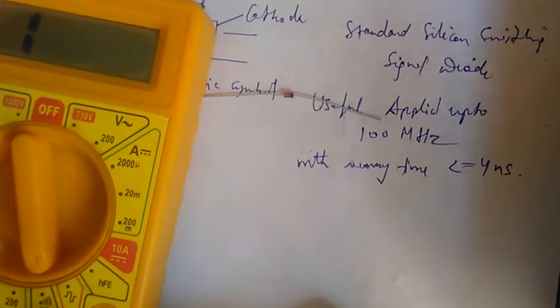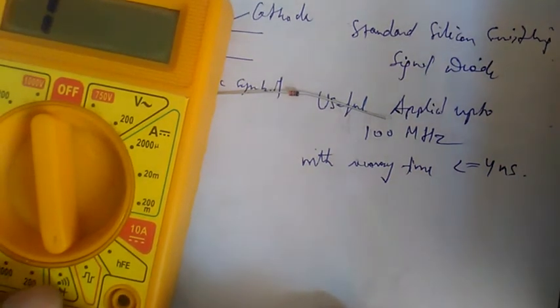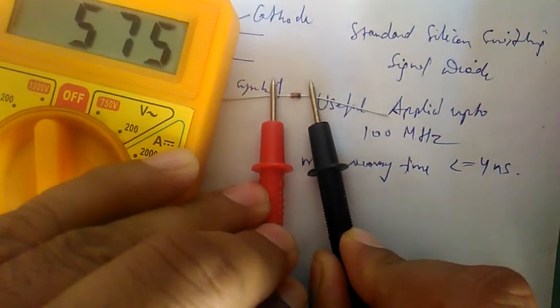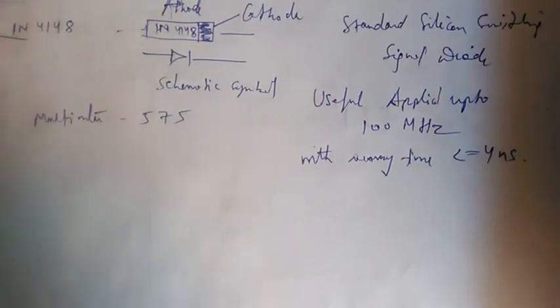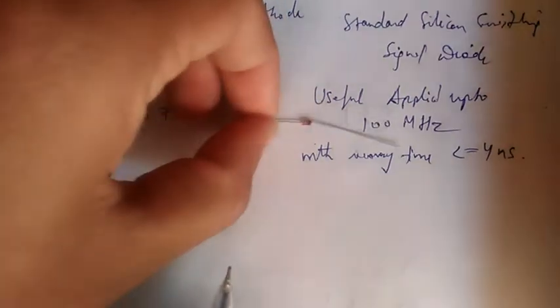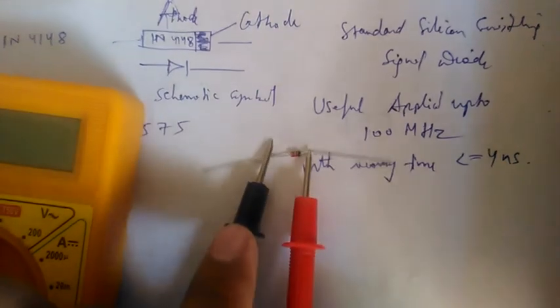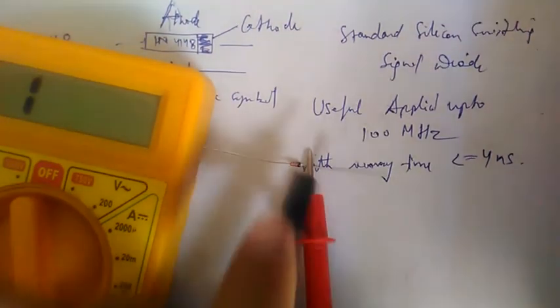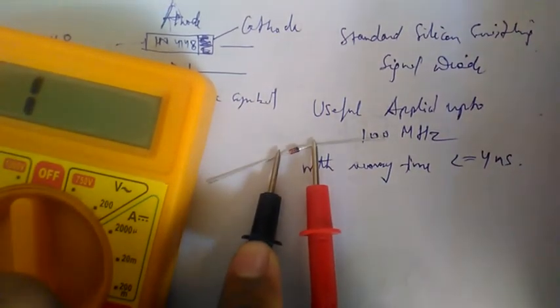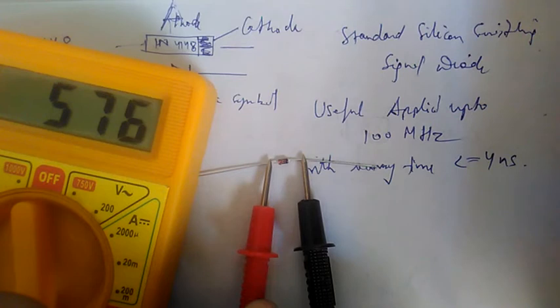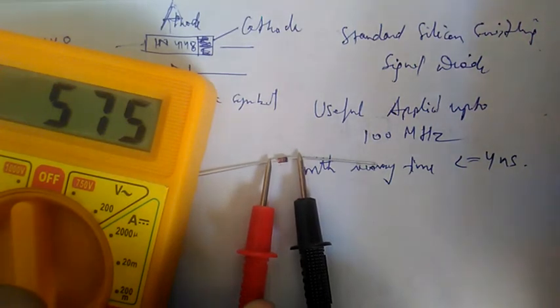You have to set the multimeter to the diode setting. Touch the probes to the leads — it is showing 575. This is the value shown by this diode on the multimeter. If we reverse the wires, it will not show any value. In one direction it shows 575, and in reverse, it shows nothing.